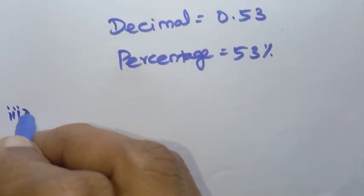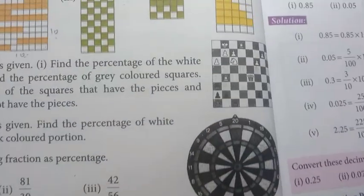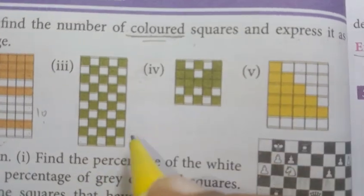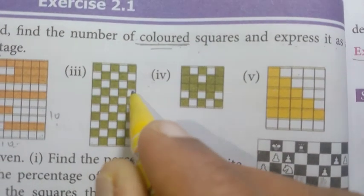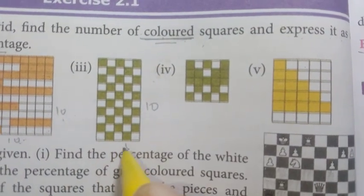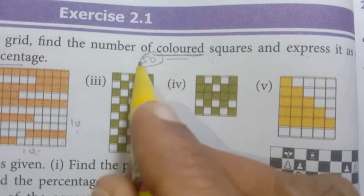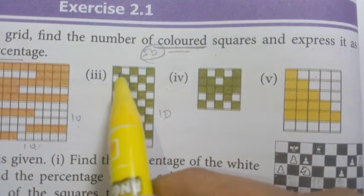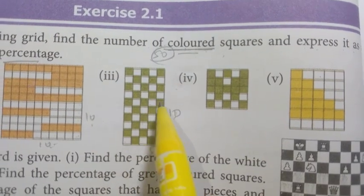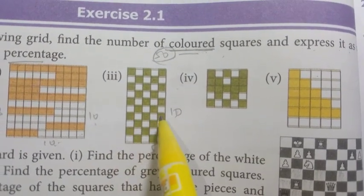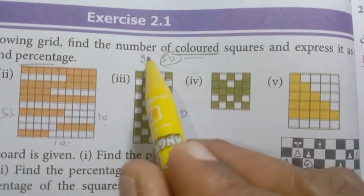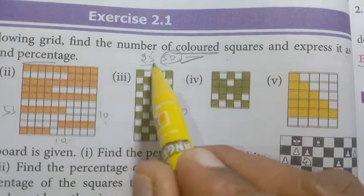Third grid: this grid has 10 columns and 5 rows. 5 tens are 50, so the total number of squares is 50. Counting the shaded squares: 1 through 25. The total shaded squares = 25.